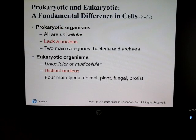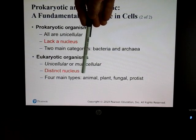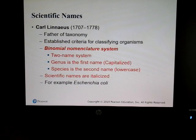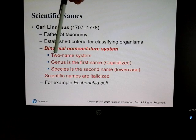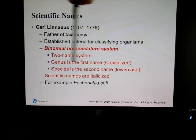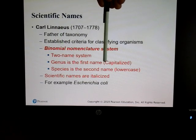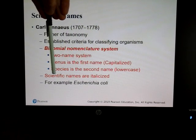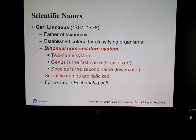Prokaryotic microbes don't have a nucleus; eukaryotic microbes have a distinct nucleus. As the semester unfolds we'll talk more about these organisms. Our scientific names use what we call binomial nomenclature — a two-name system. The genus is the first name and is always capitalized; the species is the second name in lowercase. Scientific names are italicized.